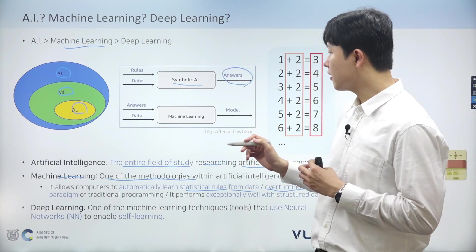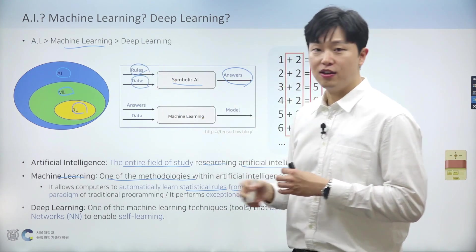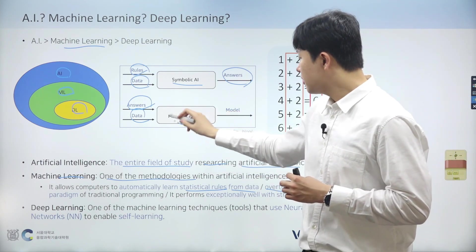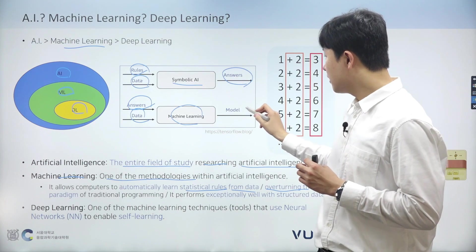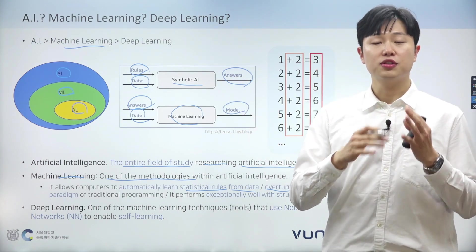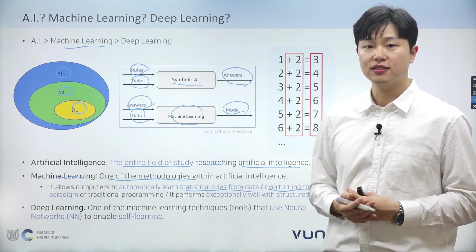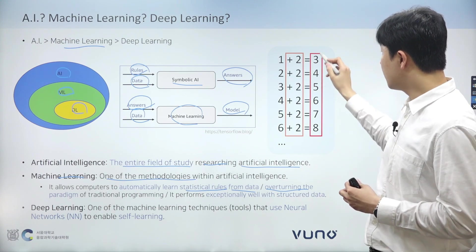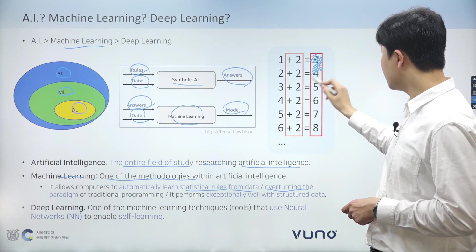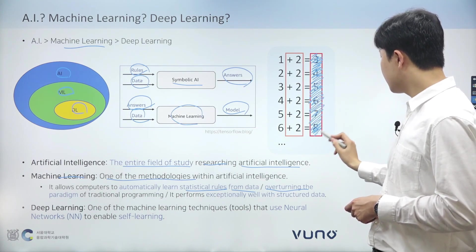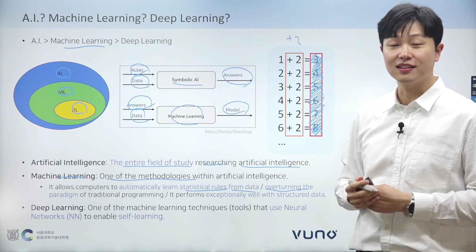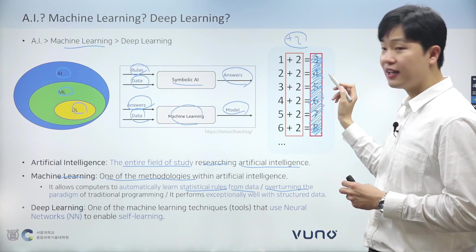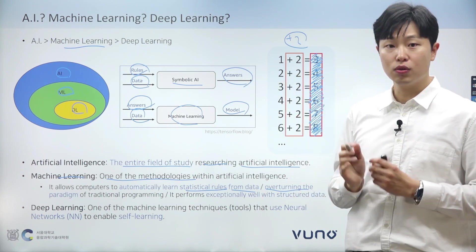With machine learning, the paradigm fundamentally shifted. Instead of just inputting data and rules, we provide answers and data to the system. During the training process, the system analyzes this data and outcomes to learn and identify patterns. As a result, a dynamic model is created that can make predictions or decisions based on new, unseen data. This process of learning and adaptation continues as more data is fed into the system. For symbolic AI, imagine we're creating a simple program that adds 2 to any number given to it. The program simply adds 2 to these numbers and returns the results. This demonstrates the direct rule-based nature of symbolic AI, where outcomes are directly tied to predefined operations without any deviation or learning. And that was the traditional programming paradigm.